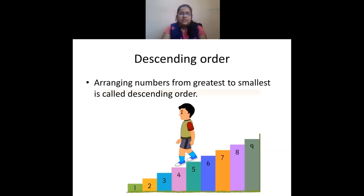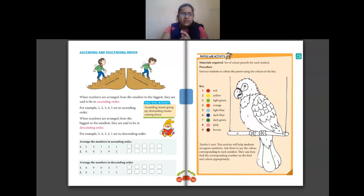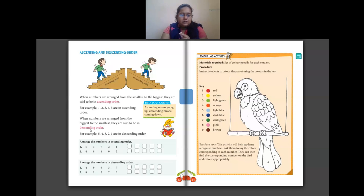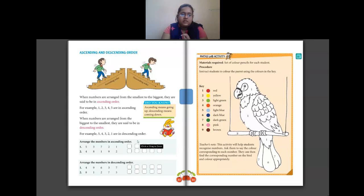So ascending order means arranging from smallest to biggest — climbing up. Descending order means arranging from biggest to smallest — going down. For example, 1, 2, 3, 4, 5 are in ascending order because they are increasing. And 5, 4, 3, 2, 1 are in descending order because we are coming down.